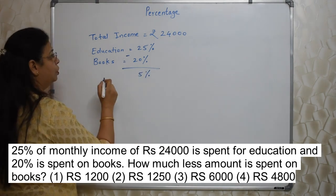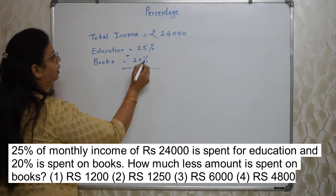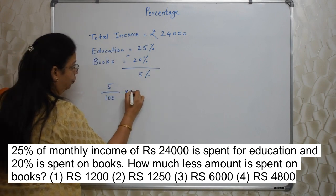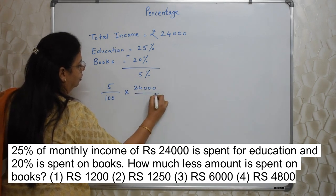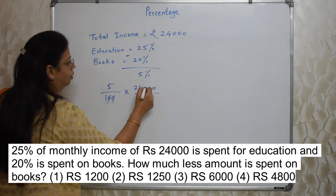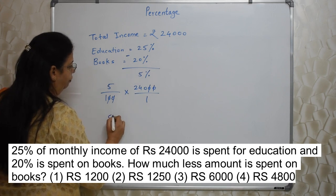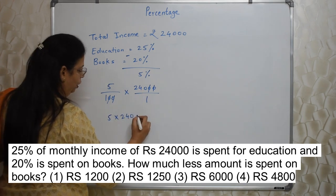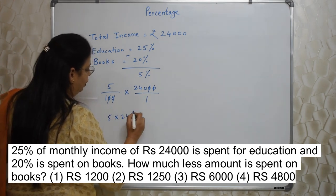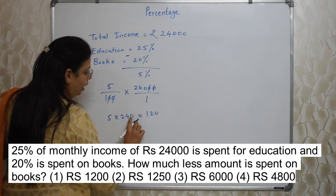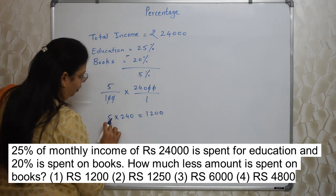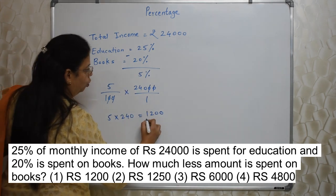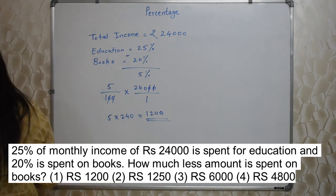But here we are solving for scholarship, where shortcuts are very important to save time. So instead, we subtract the percentages directly: 25% minus 20% = 5%. Now straight away find 5% of 24,000. Cancel two zeros from numerator and denominator. Remaining is 5 into 240, which is 1,200 rupees. The answer is Rs.1,200.